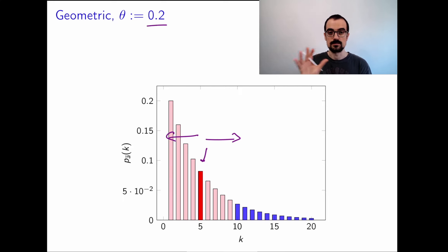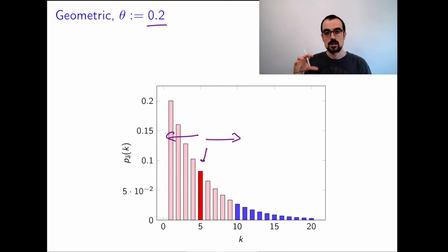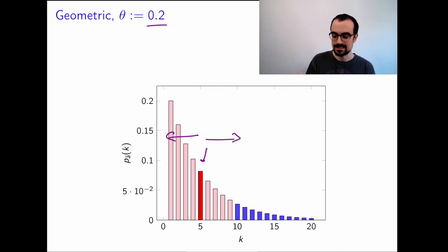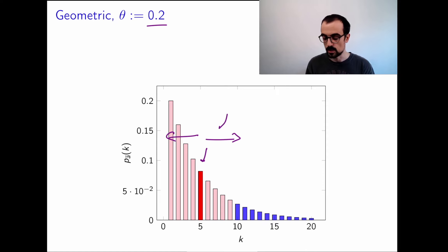To get an expression in the same units as the original variable, we take the square root to compute the standard deviation. Here I've plotted the mean plus or minus one standard deviation for a geometric random variable with parameter theta equals 0.2, so you can visualize the connection between the mean, standard deviation, and the distribution.